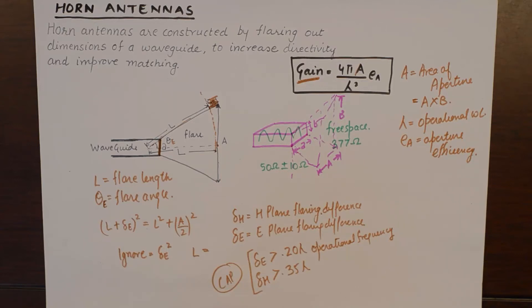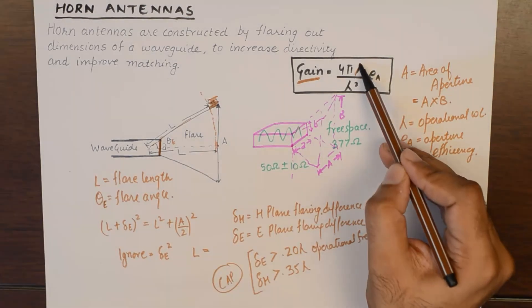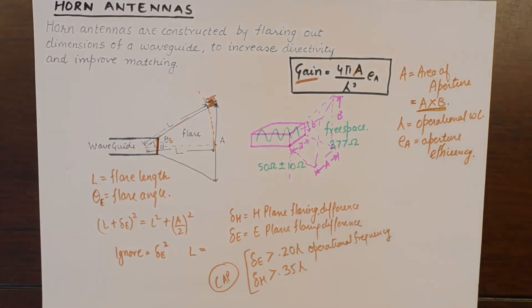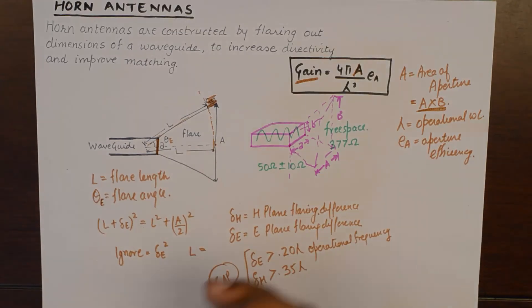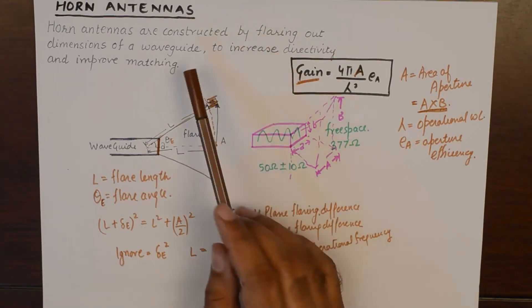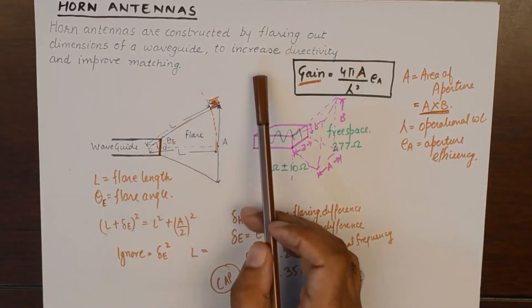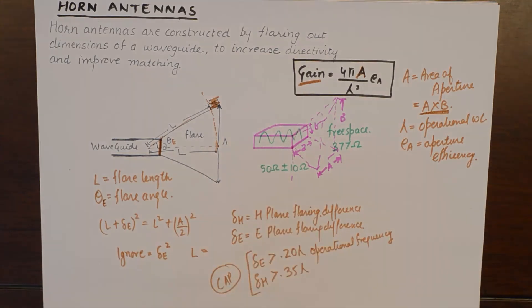The fundamental difference between horn antenna and the other antennas is the aperture associated with them. The more aperture associated with them, the more flaring we do, the more gain we can achieve. Now, if you look back into the definition of the horn antenna, it is not just flaring out the dimensions of a waveguide. It also increases directivity and improves matching. The directivity and gain is increased because of enhanced area of aperture.